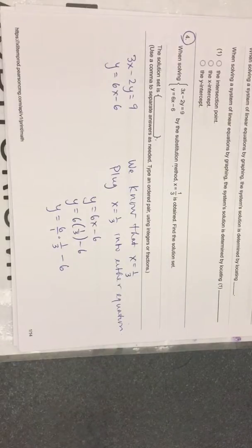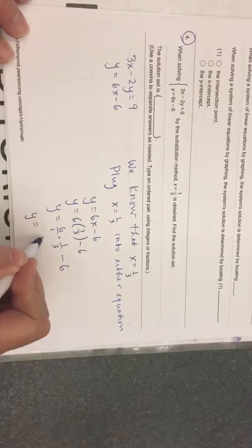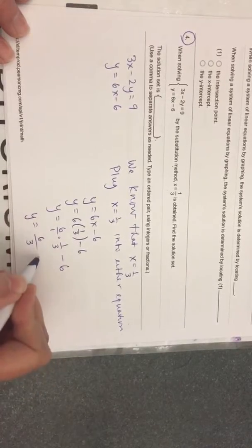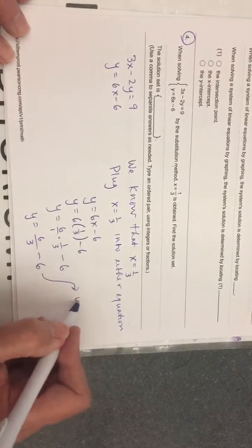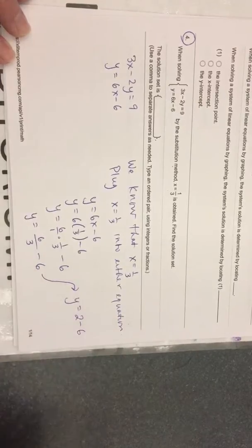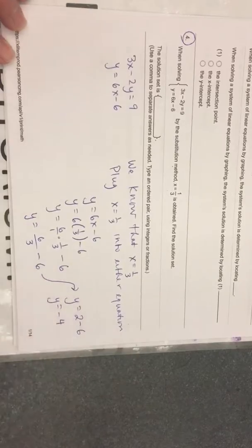You multiply straight across. 6 times 1 is 6, 1 times 3 is 3. 6 over 3 minus 6. 6 over 3 reduces to 2. 2 minus 6 for y. y equals negative 4.